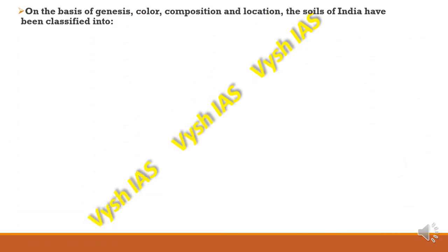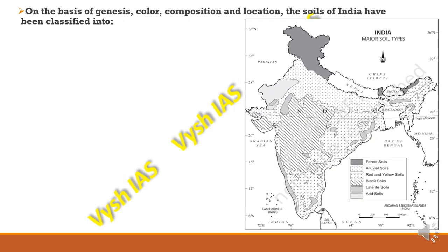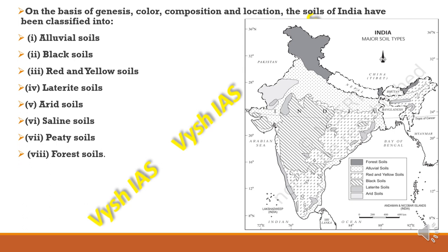On the basis of genesis, colour, composition, and location, the soils of India have been classified into eight types: alluvial soil, black soil, red and yellow soil, laterite, arid, saline, peaty, and forest soils.